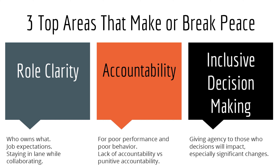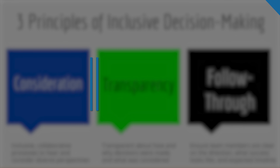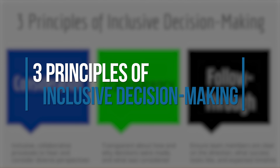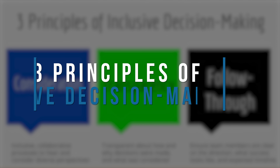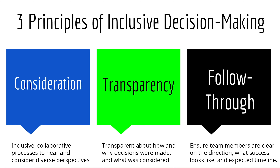One of the number one areas that creates a lot of conflict is role clarity — when people are not clear about what they're supposed to be doing, if they don't have clear job descriptions, and if they're not clear about where their lane ends and begins. If other people are crossing into their lanes and taking responsibility for things they thought they should be responsible for, or vice versa, this creates a lot of conflict.